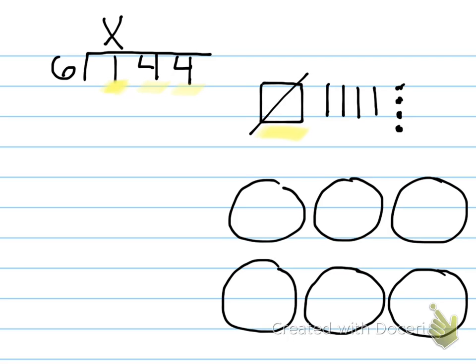There are 10 tens in 100, so let's show the tens: 1, 2, 3, 4, 5, 6, 7, 8, 9, 10. There we go. So now we're looking — we have 14 tens total: 1, 2, 3, 4, 5, 6, 7, 8, 9, 10, 11, 12, 13, 14. Right? And that matches right up.